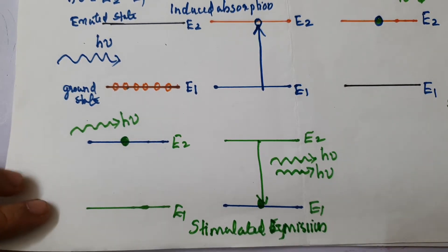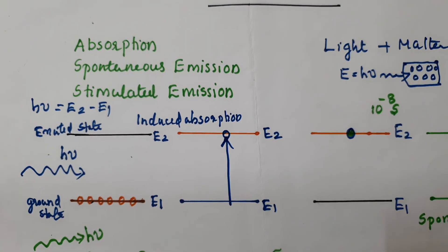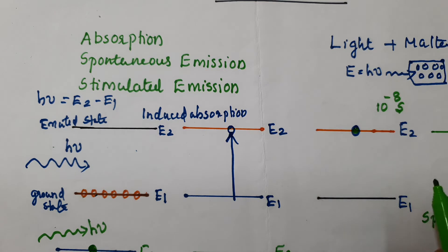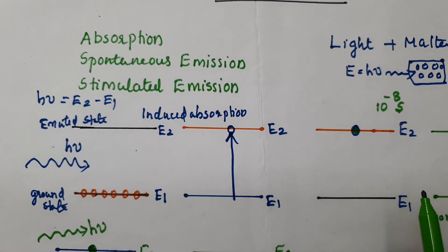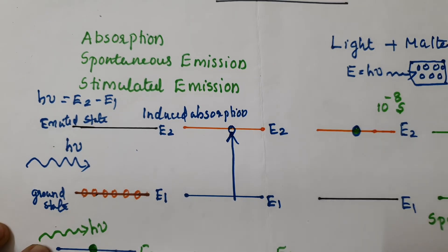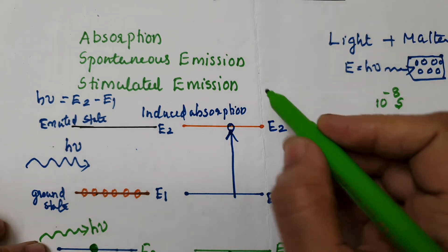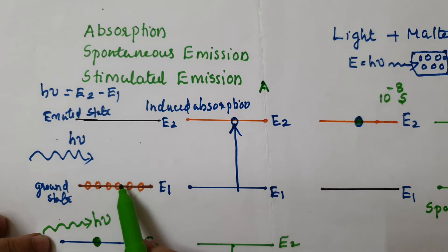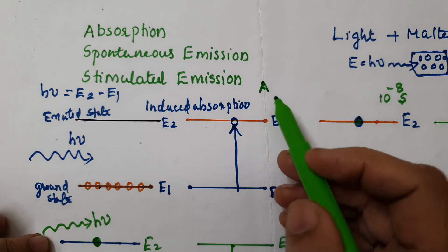This process is called stimulated emission — 'stimulated' means it takes place by the help of an external agency, an external stimulation. So the three basic processes are: first, absorption; second, spontaneous emission; and third, stimulated emission.